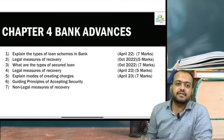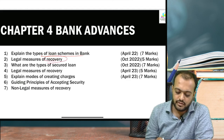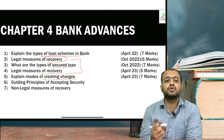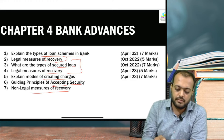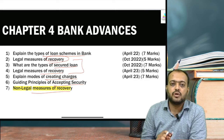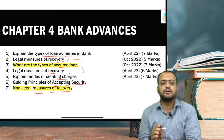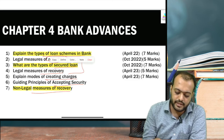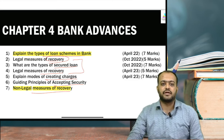Chapter 4 — Bank Advances. From previous year questions, important topics are: types of loan scheme in bank, legal measures of recovery, types of secured loan — legal measures of recovery has come twice. Modes of creating charge — the charges created when a loan is taken, like hypothecation. Guiding principles of accepting security. And lastly, non-legal measures of recovery — I have added the non-legal one because previously only legal measures were asked, so I feel non-legal measures will come now. If time is limited, at least do types of loan scheme and both legal and non-legal measures of recovery. Work smartly — even with limited time you will get good results.